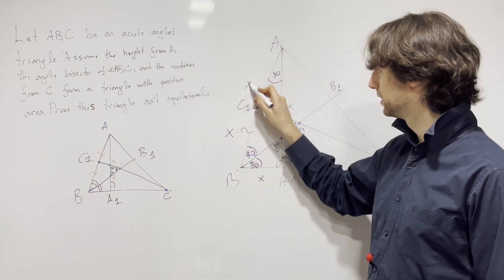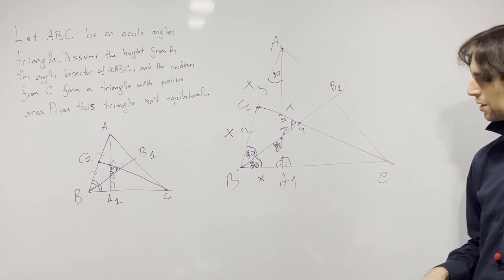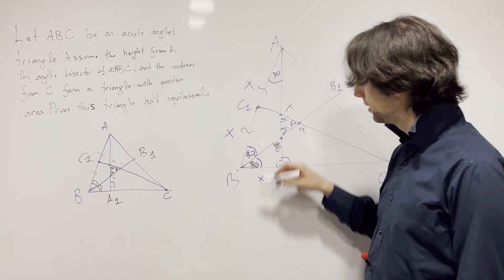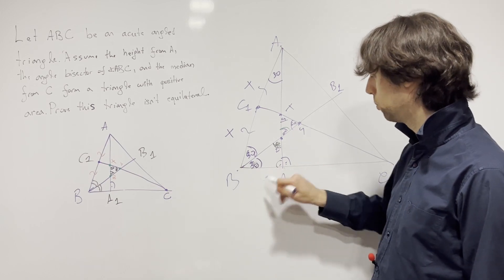And now given this is equal to this is equal to X, now I have BA1 is equal to BC1.